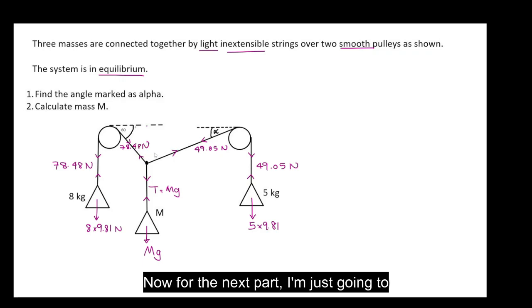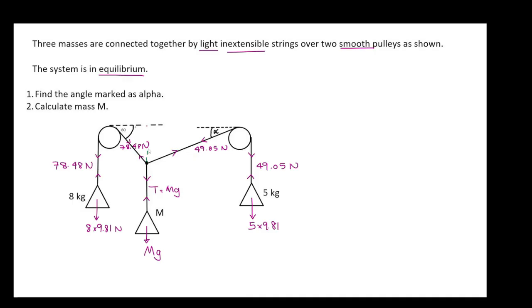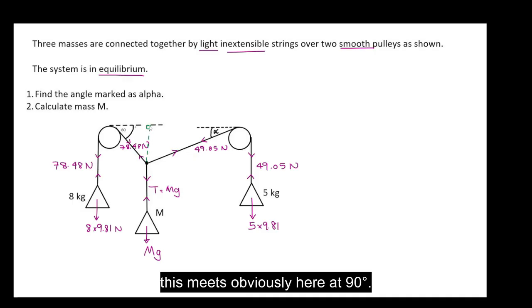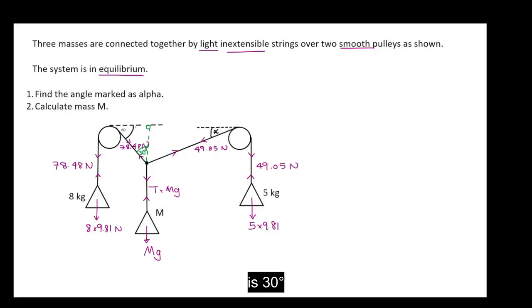Now for the next part, I'm just going to extend this line here. So this meets obviously here at 90 degrees. That is 60 degrees. So obviously this angle here is 30 degrees.